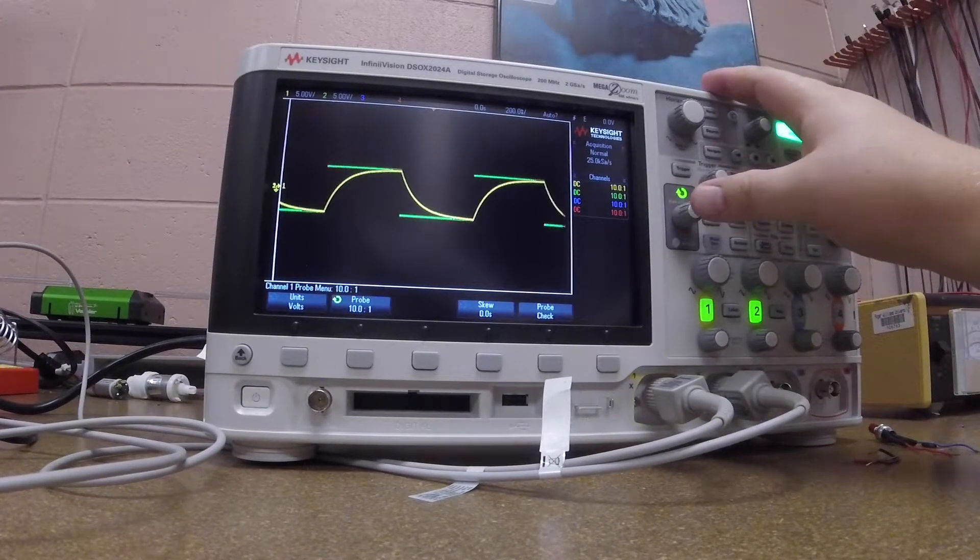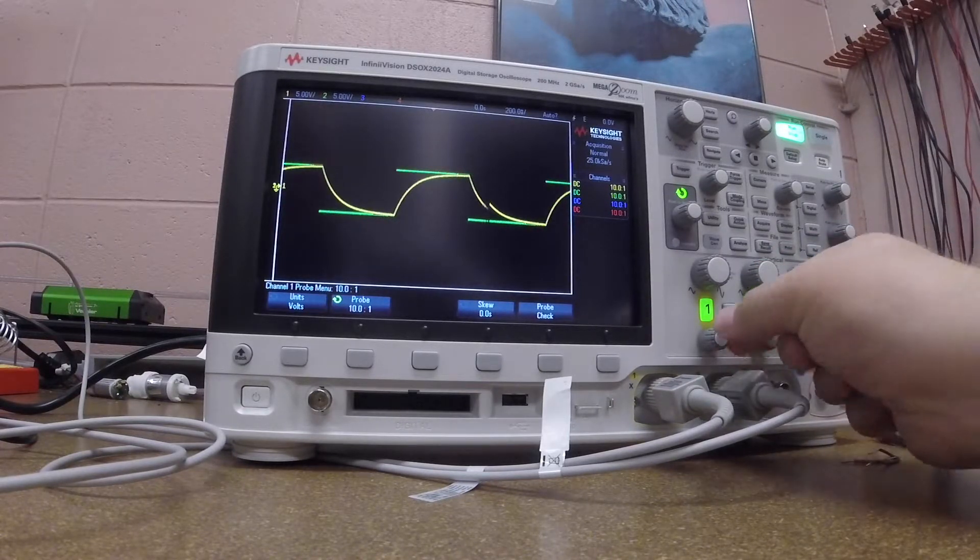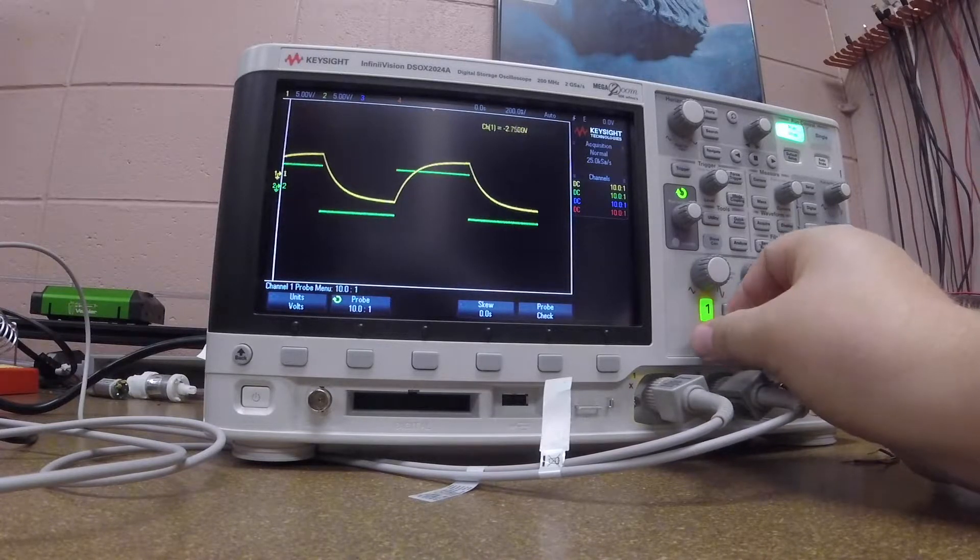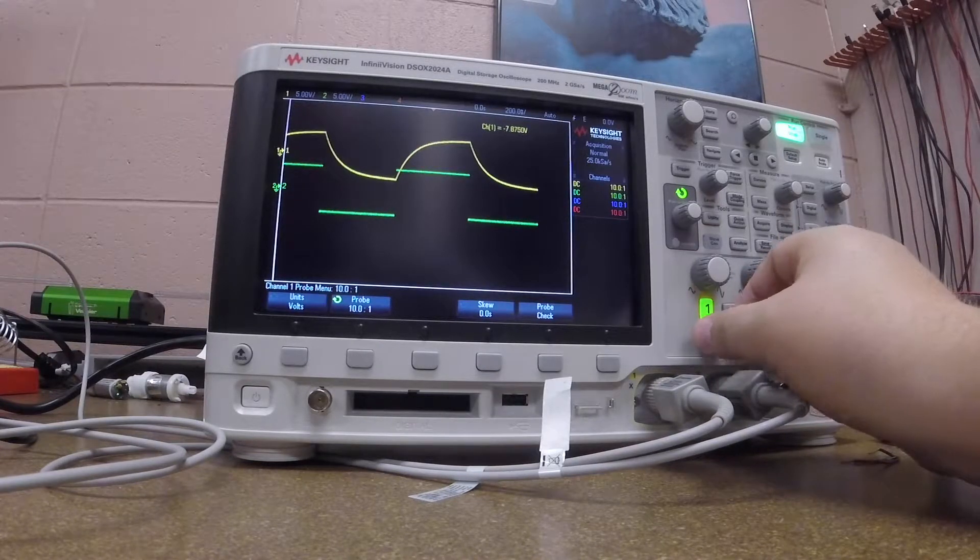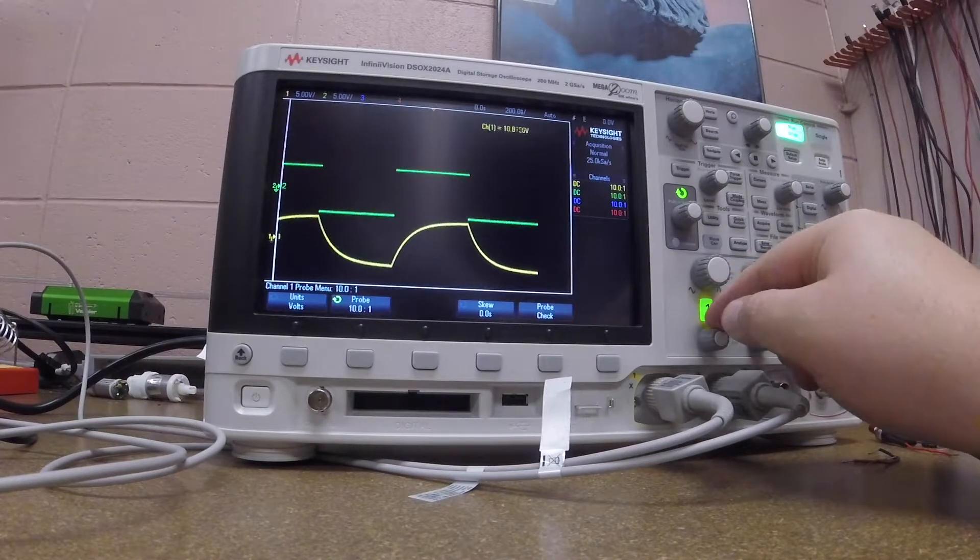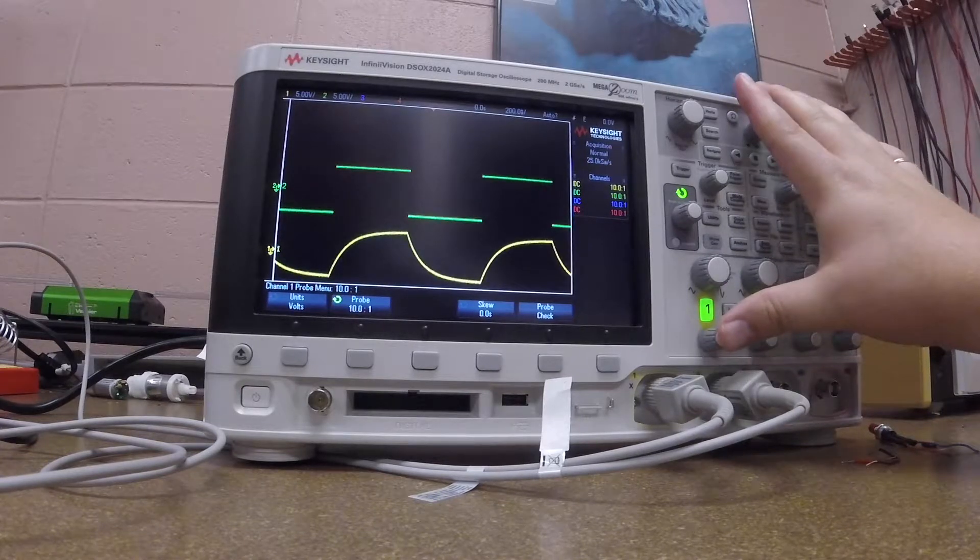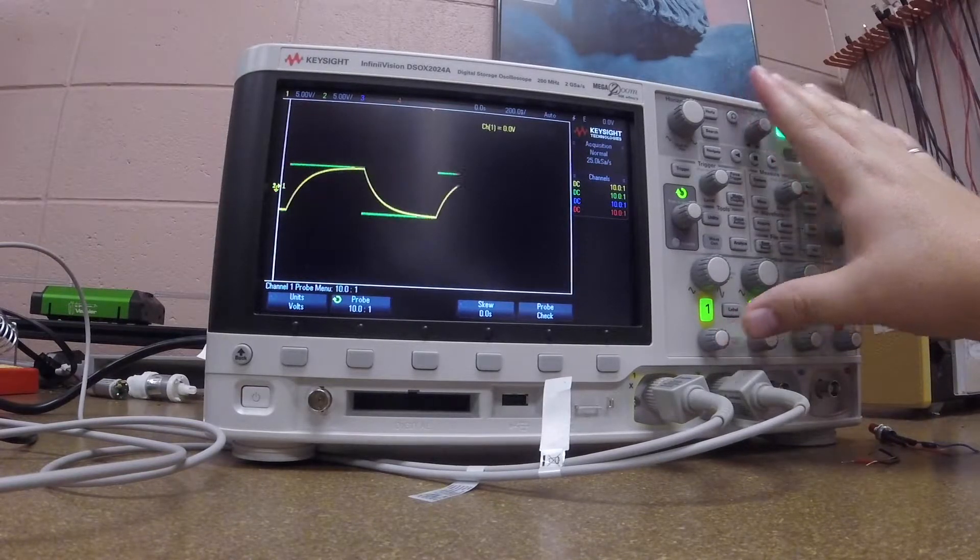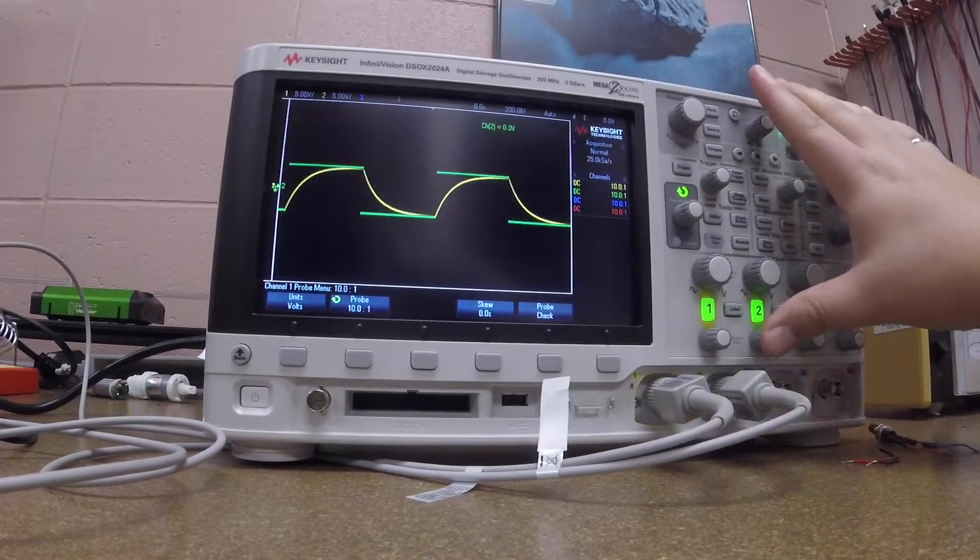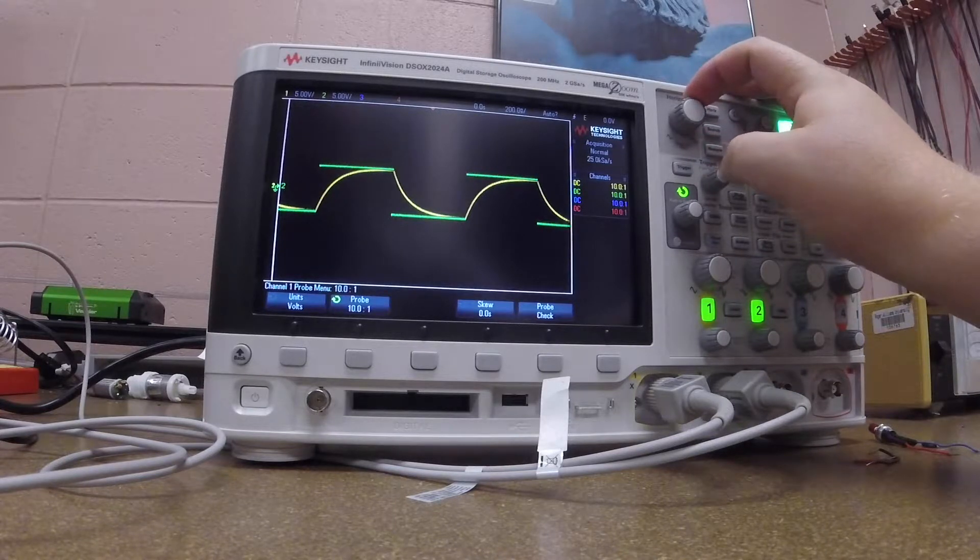Also in the same location, we have this knob down here, which I can use to adjust to where ground or reference is. Typically, it's at zero, but if I increase it or decrease it, it moves my waveform up and down. Sometimes this is nice if I don't like waveforms on top of each other. If I want to return it to zero, I can just push in on the button and it will very quickly return. We can do the same thing with channel 2.